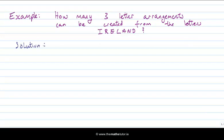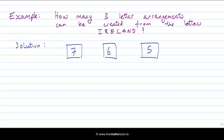We're going to count three-letter arrangements, so we think of three boxes representing the letters of our arrangement and count the number of choices in each box. In the first box we have seven choices, in the second box we have six choices, and in the third box we have five choices. When we go from the first to the second we've used up one letter, and by the third box we've used up two letters. The fundamental principle of counting tells us to multiply: seven times six is 42, and 42 times five is 210 — so we have 210 three-letter arrangements from the letters of IRELAND.